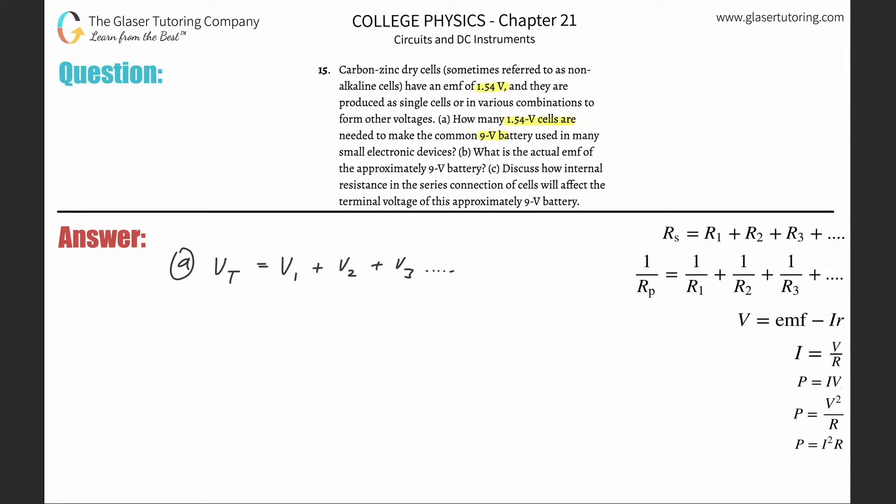Now, what we realize is that we have a total voltage of 9 volts and we know that each voltage of each cell is going to be about 1.54.